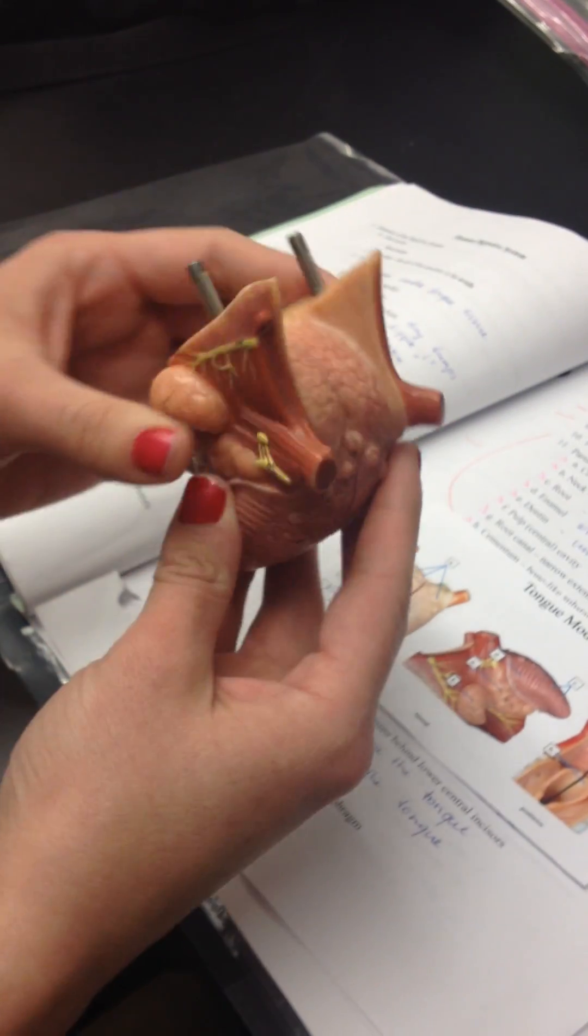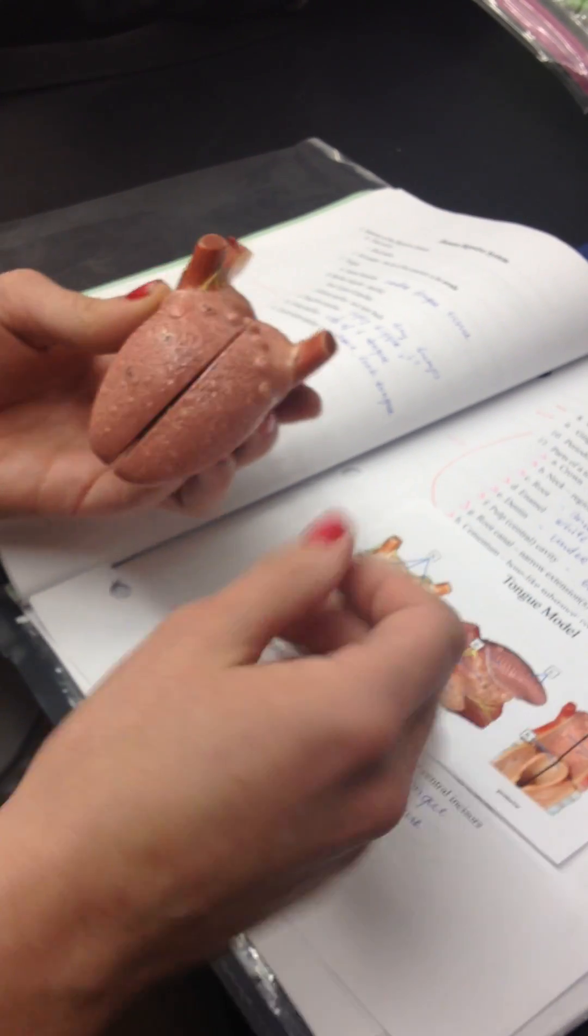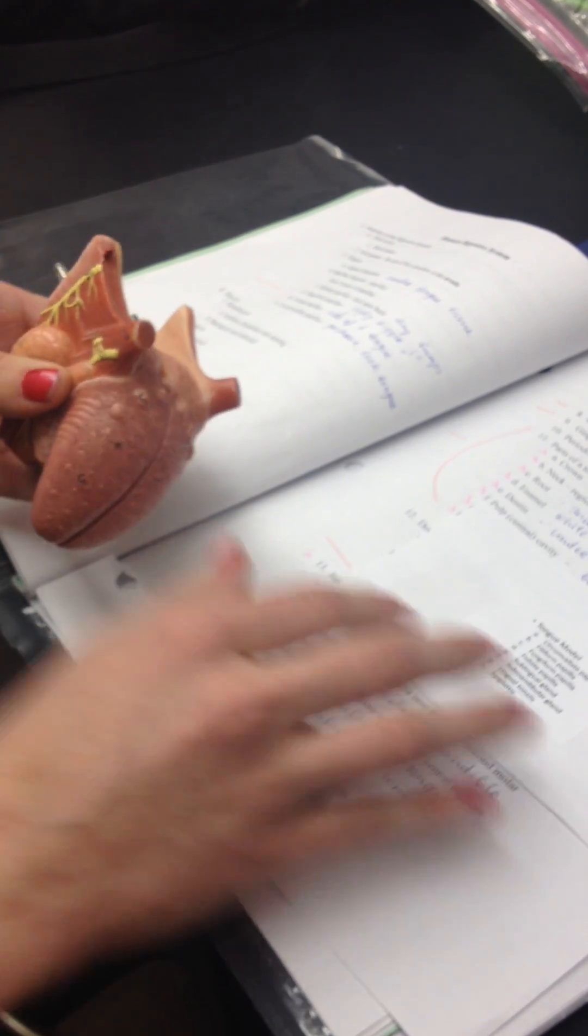So this is your tongue model. This oral cavity is going to be involved in both respiration and digestion. We have a few things that we need to identify.